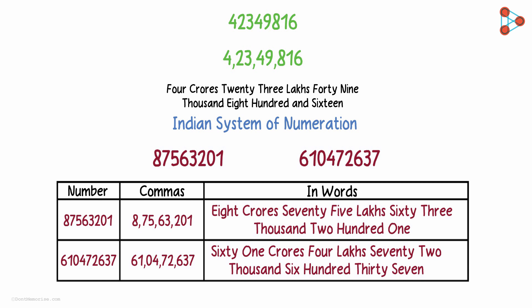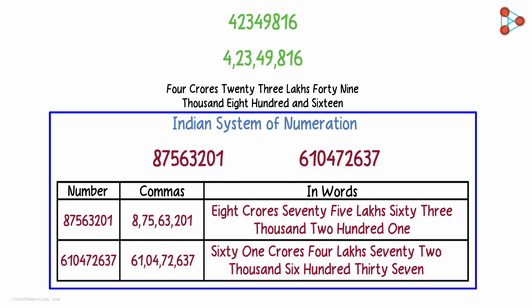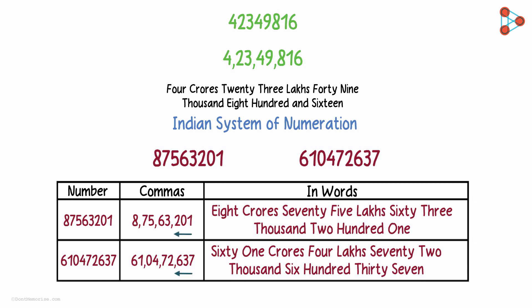So I hope the Indian system of numeration is clear now. Go leftwards — 3, 2, and 2. Thousands, lakhs, and crores.